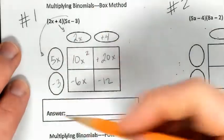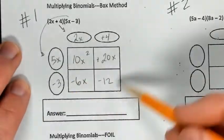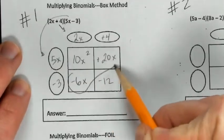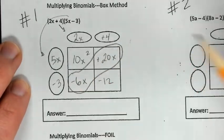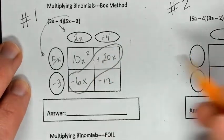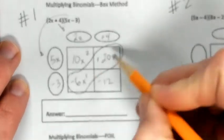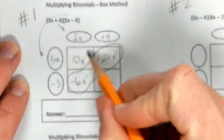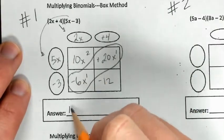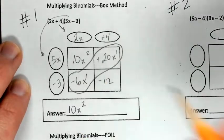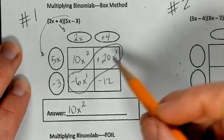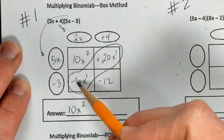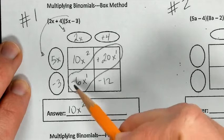So I multiply to get inside the box. Now once I'm inside the box, I'm looking for like terms — I want to combine like terms. Those are my like terms there; those are both raised to the first power, so I can combine those. I'm going to get 10x squared — writing it in standard form so the greatest exponent comes first.